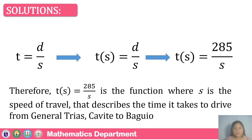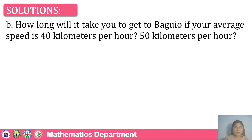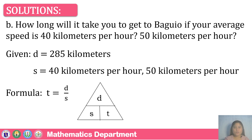Therefore, T of S is equal to 285 over S — this is the function where S is the speed of travel that describes the time it takes to drive from General Trias Cavite to Baguio. For task B, the given values are the distance of 285 kilometers and speeds of 40 kilometers per hour and 50 kilometers per hour. The formula to be used is T equals D over S.